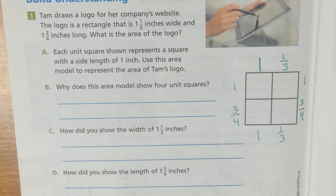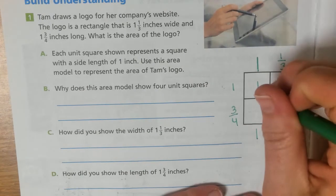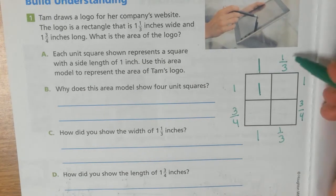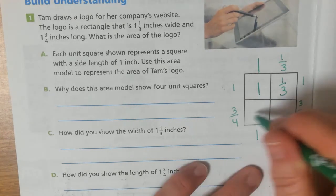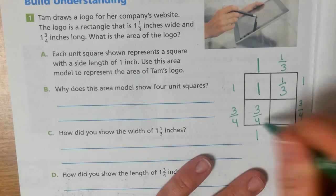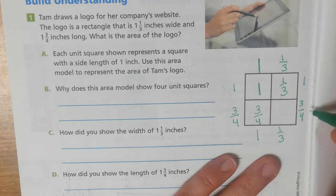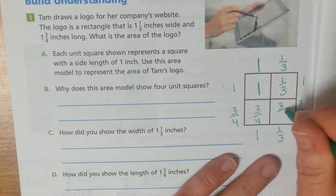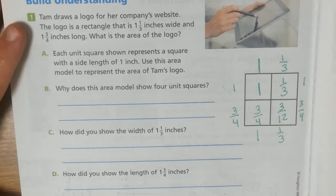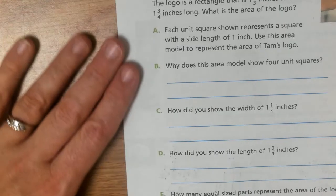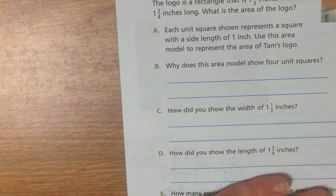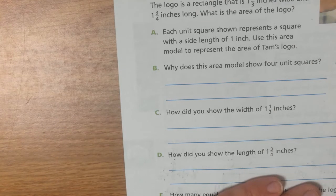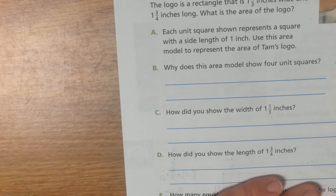So, we will multiply 1 times 1, easy enough, is 1. 1 times 1/3, 1/3. 1 times 3/4, 3/4. And, 1/3 times 3/4, is 3/12. Okay? So, now, we can add all those together. So, we would have 1 plus 1/3, plus 3/4, plus 3/12.